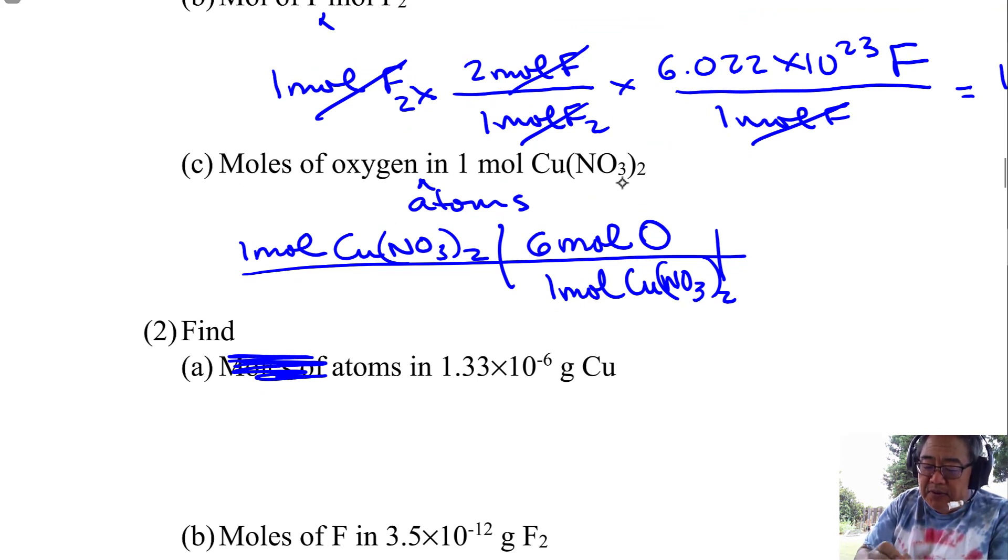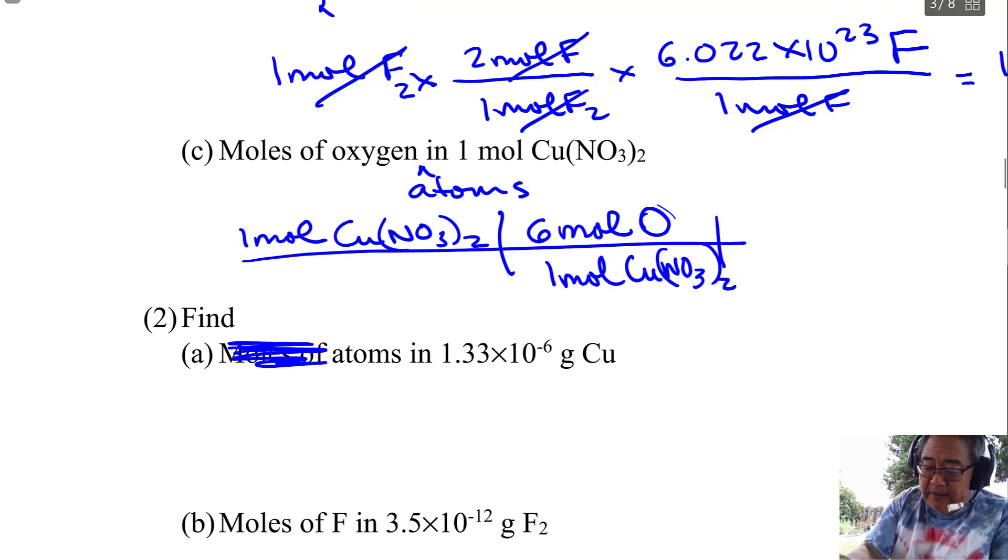So there's six moles of oxygen for every mole of copper nitrate. So we just want the moles of oxygen in one mole of copper nitrate. So it doesn't say atoms of oxygen. It just says moles. So we're going to stop here because this will give me moles. And so it'll be just six moles in there. And this will cancel like that and it leaves me with the units that I'm looking for. So be really careful.